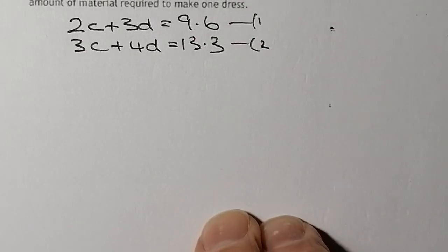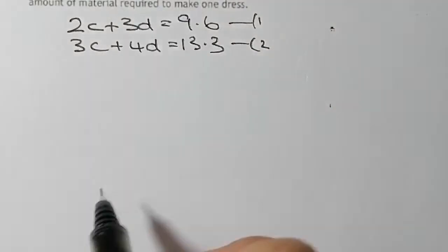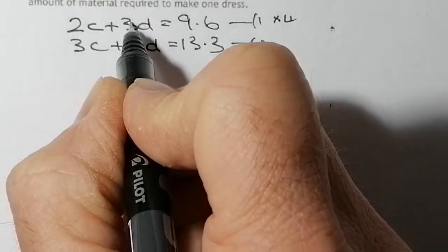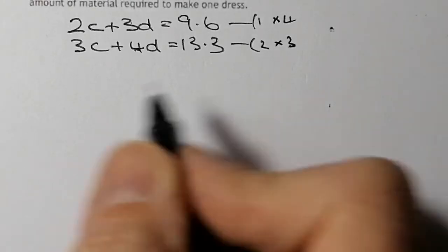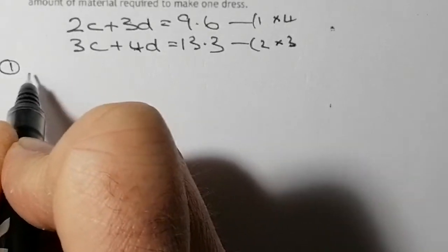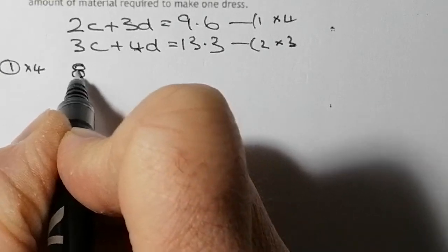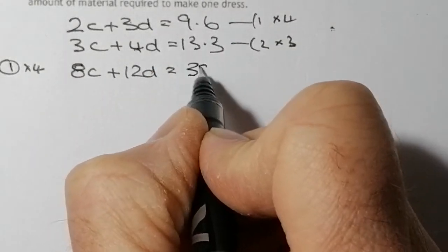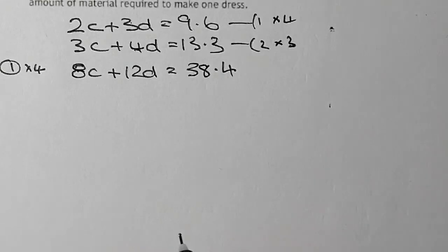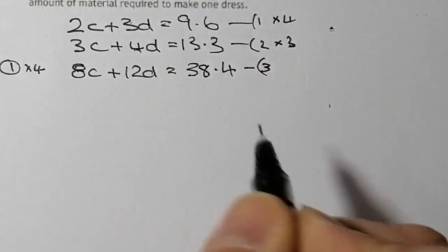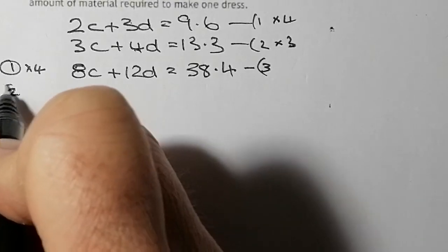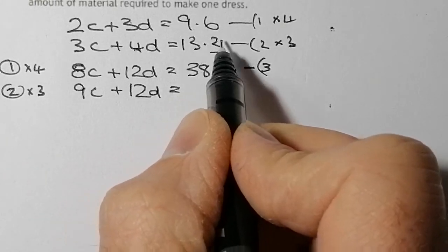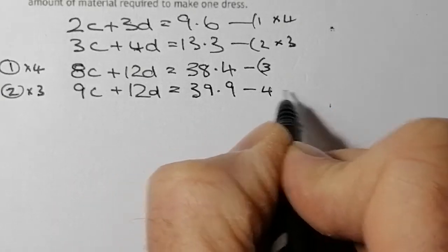Now I'll solve for the material needed to make one cloak and one dress. I'll scale by the middle coefficients: multiply equation 1 by 4 and equation 2 by 3. Equation 1 times 4 gives 8C plus 12D equals 38.4 — that's equation 3. Equation 2 times 3 gives 9C plus 12D equals 39.9 — that's equation 4. Similar approach to the previous question.